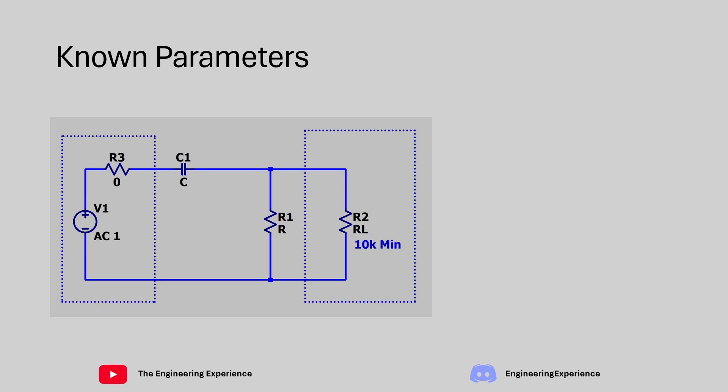Let's talk about the known parameters. The cutoff frequency is 10 hertz, the source impedance is 0 ohms and the load impedance is 10 kilo ohms minimum. This is what our filter is going to look like.